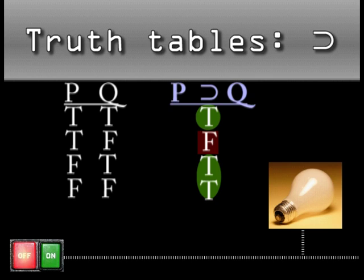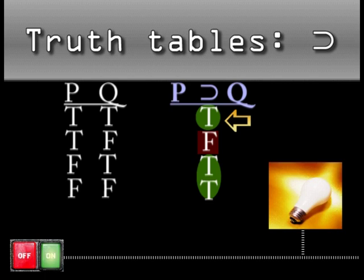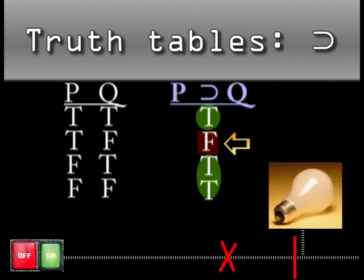P implies Q holds true unless P is true and Q is false. This is like a light that goes on when switch P is on. If the switch is on, then we expect the light to be on. But the light might also turn on from some other switch. So the switch P being off doesn't make the statement, if P is flipped on, then the light is on untrue. Only one thing can make that statement, if P is on, the light is on false, turning P on and finding the light off.